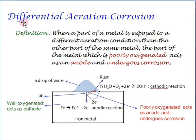Let us look into differential aeration corrosion in detail. We can define this as when a part of a metal is exposed to a different aeration condition than the other part of the same metal, the part of the metal which is poorly oxygenated acts as an anode and undergoes corrosion.